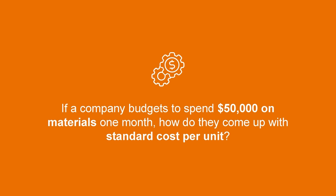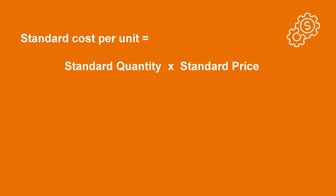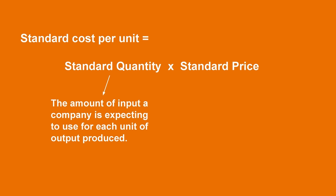For example, let's say a company budgeted to spend $50,000 on materials one month. How did they come up with this number? Well, they likely developed a projection for how many units they planned to produce and multiplied this by the expected cost for each unit, also known as the standard cost per unit. But how did they come up with this standard cost? Let's break it down with the formula: standard cost per unit equals standard quantity times standard price.